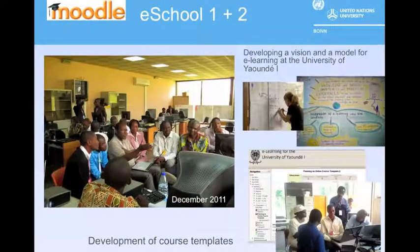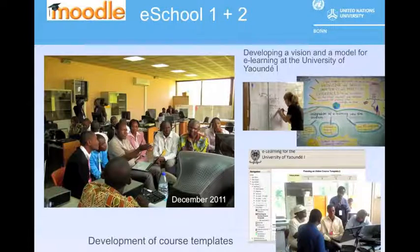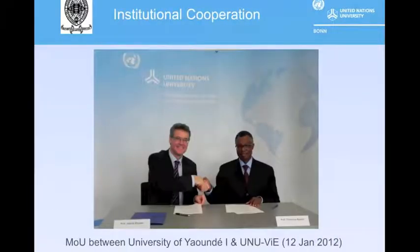To ensure ownership among professors and students, brainstorming, e-learning training, and course development were all handled by the university, supported through external experts. The concept, conceived in 2008, remained unfunded until the first e-school in 2011, which was supported by the DAAD. This project has taken us to another level of institutional cooperation between the United Nations University Vice-Rectorate in Europe and Yaounde-Won, cemented by a MOU signed in January of this year.